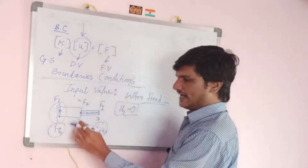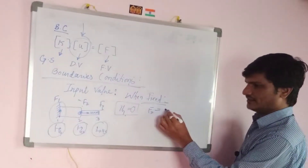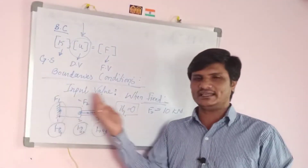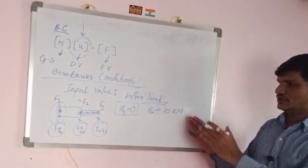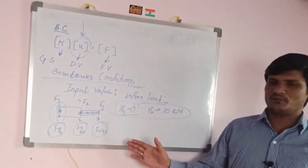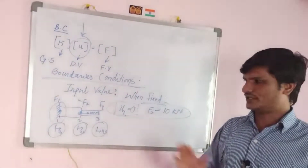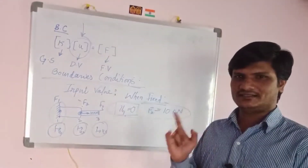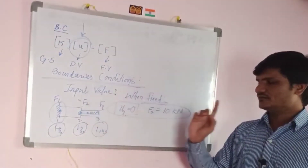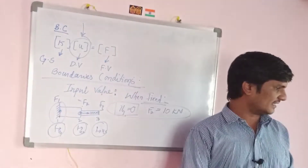Since the force is applied at node 2, the input value is f2 = 10 kilonewtons. f1 and f3 become zero because no force is applied at nodes 1 and 3. These are the boundary conditions for this bar problem. Remember: fixed means displacement is zero, and wherever a force is applied, that nodal force takes the given value.